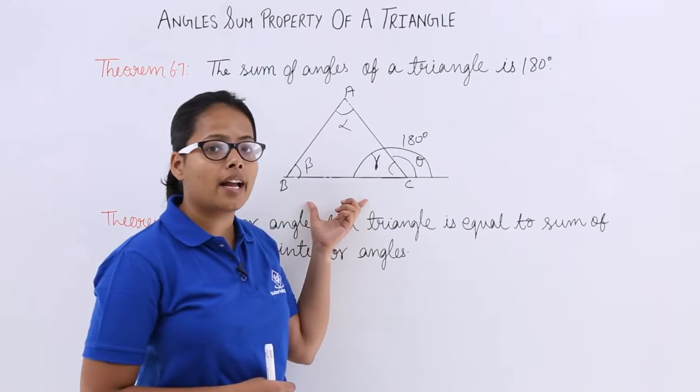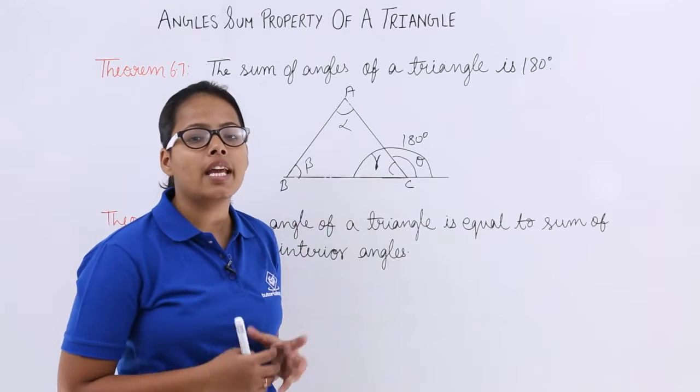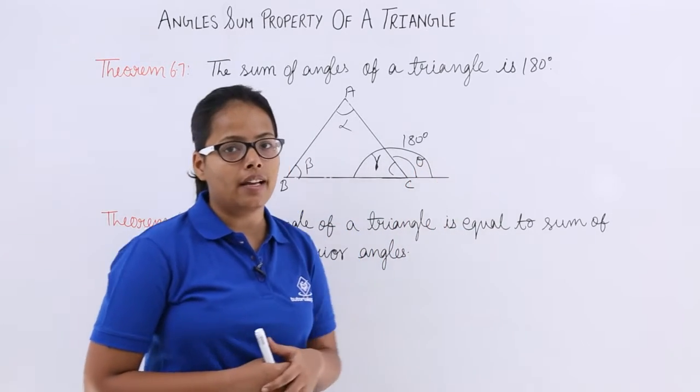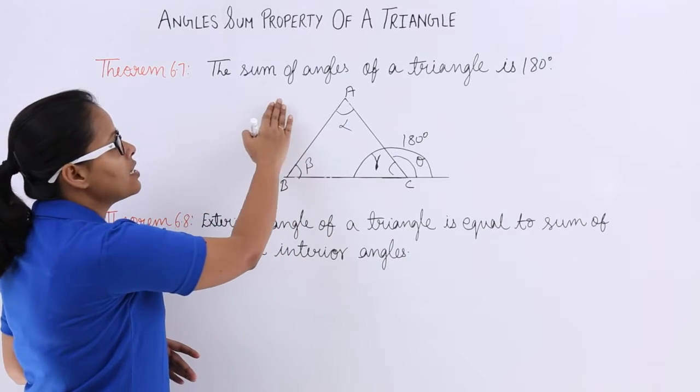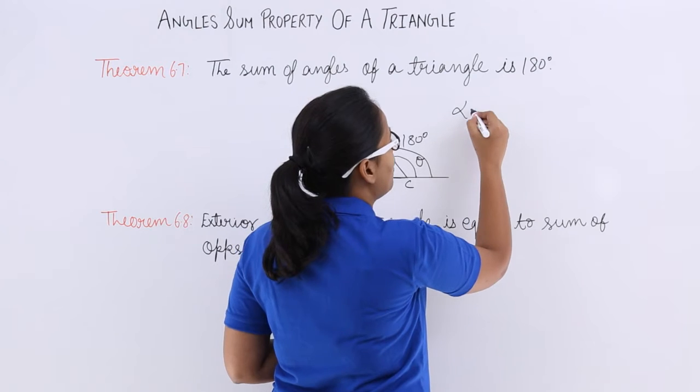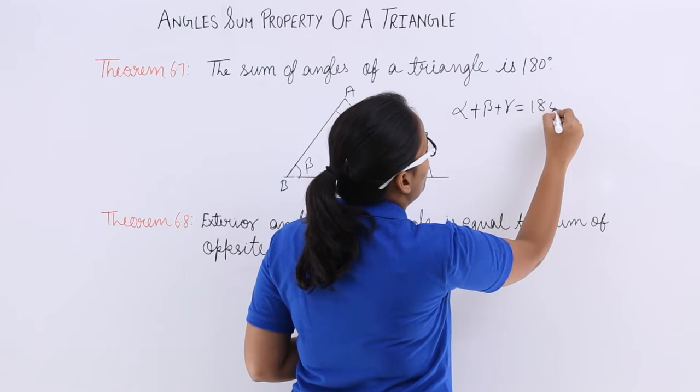You can see here a triangle and these are the angles alpha, beta, gamma. These are the angles of a triangle and theta is the exterior angle. The sum of angles of a triangle is 180 degrees, which means alpha plus beta plus gamma equals 180 degrees.